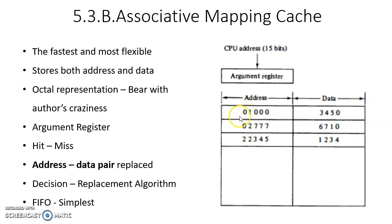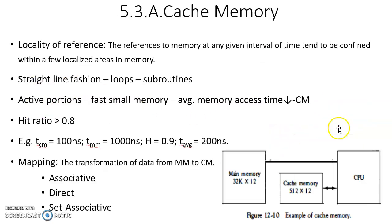The 15-bit address is represented using 5 octal digits because each octal digit is 3 bits (5 × 3 = 15). The maximum digit value is 7 since octal uses 0 to 7. The data is 12 bits, represented as 4 octal digits (4 × 3 = 12). This is why the author chose memories with 12-bit words — to suit octal representation. This concludes the first half of the cache memory topic. In the next class we will discuss direct cache mapping and set associative cache mapping, and then the topic will be complete. Thank you.